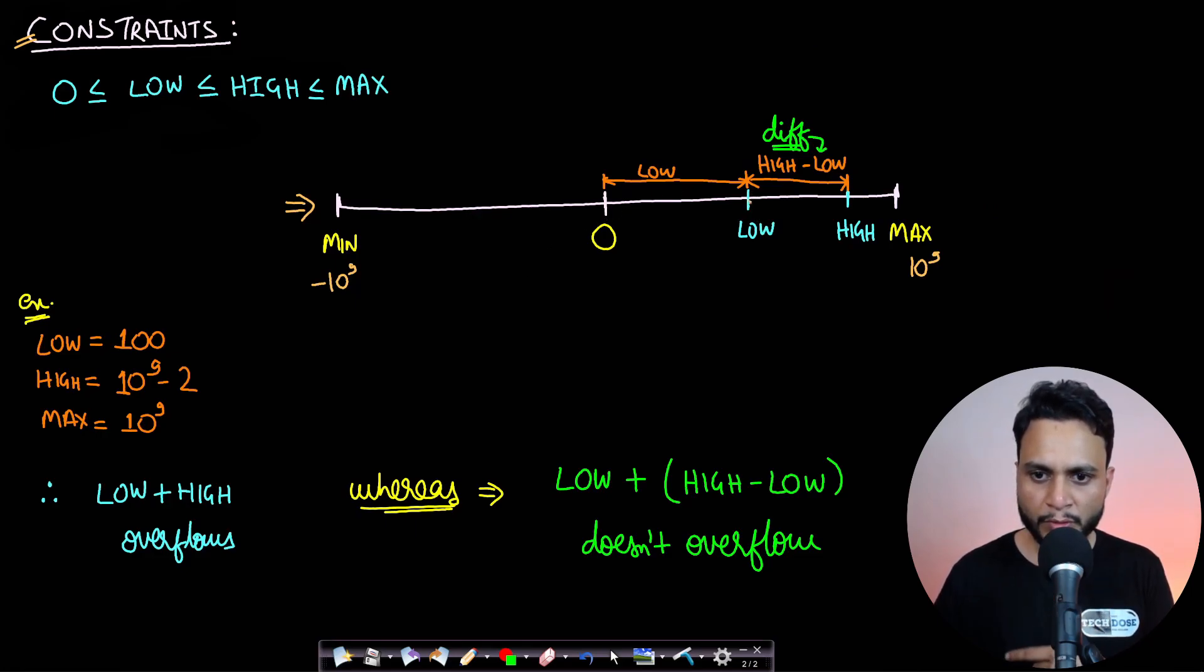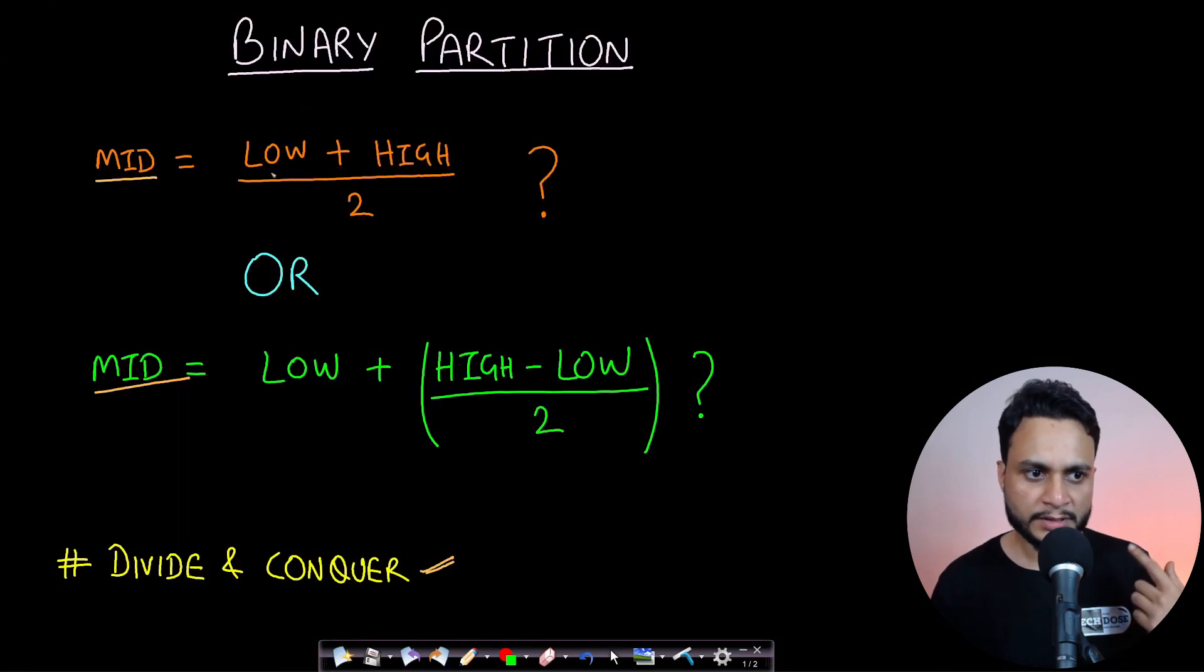Now in this number line if I assume low somewhere here and high somewhere here, then you will see that if I follow the first formula which is mid equals to low plus high by 2...